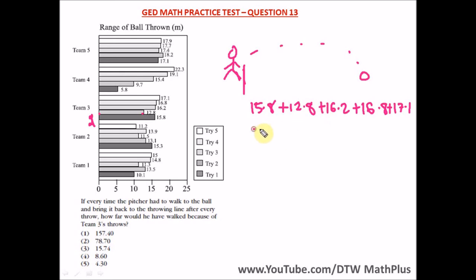So when we add this up, what are we going to get? If you punch in your calculator, we are going to get a total of 78.7, which is also equal to 78.70. So this is our answer and our right option is option two.